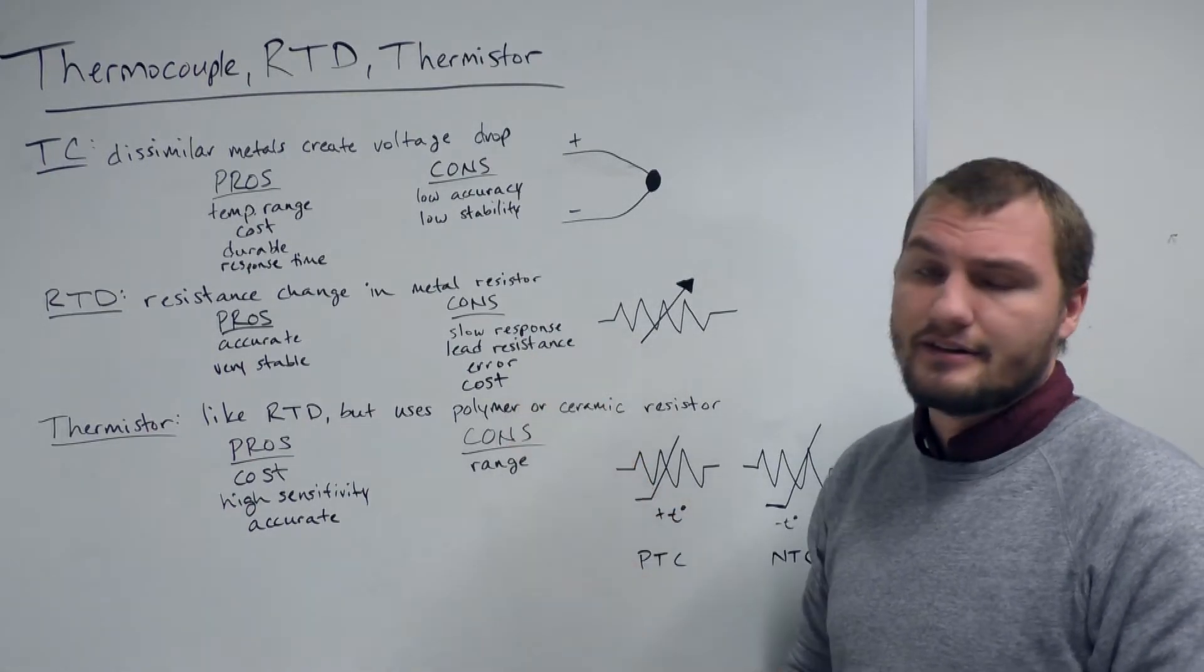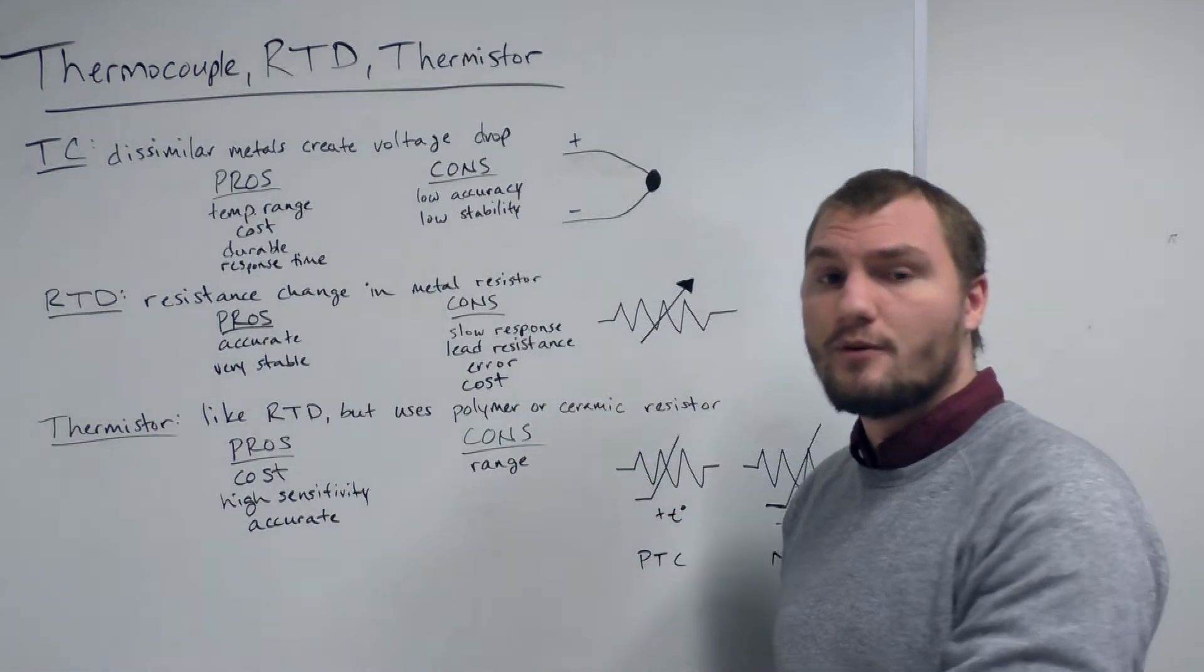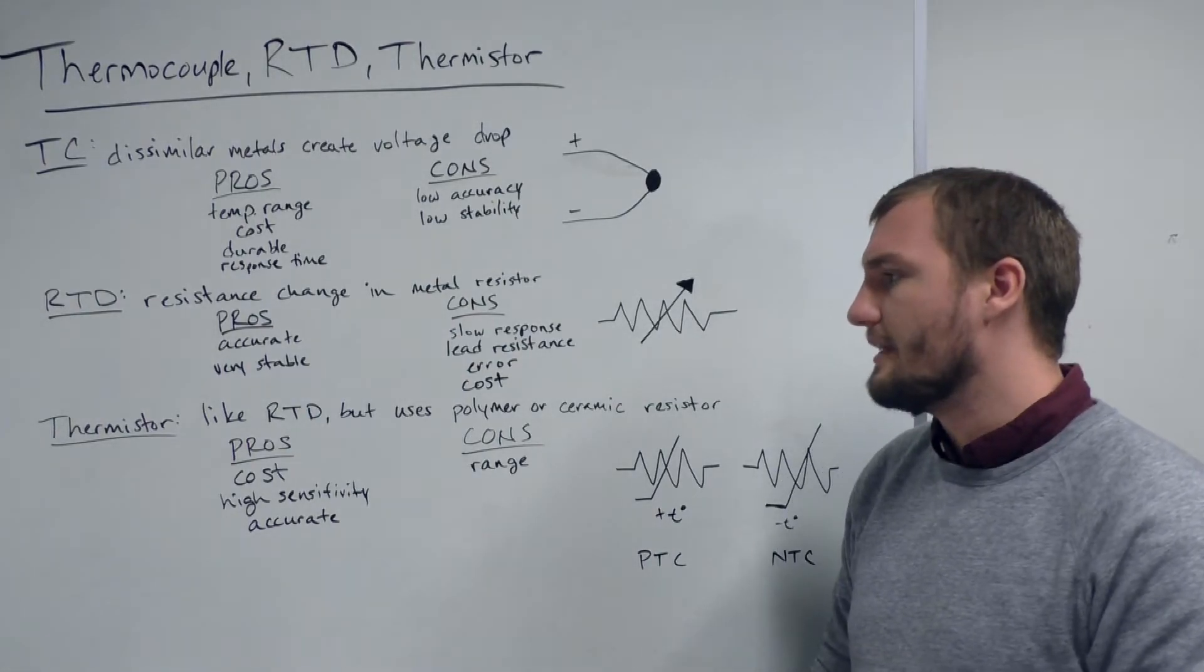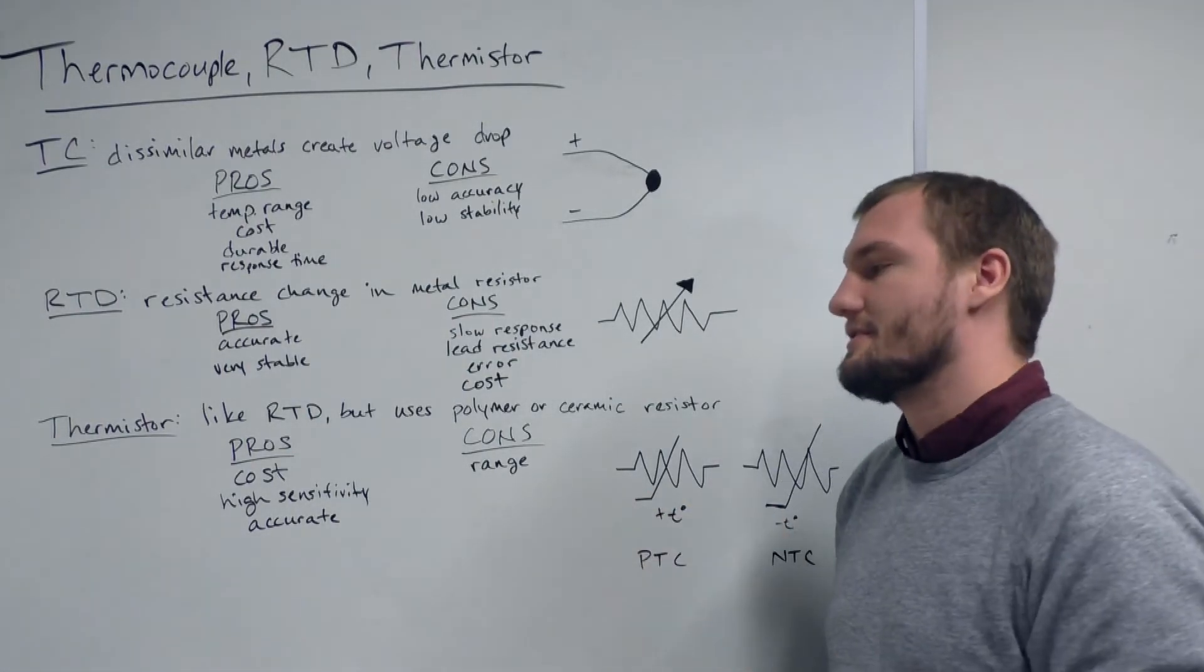Particularly because of this lead resistance error, the two-wire, three-wire, and four-wire RTDs are available to deal with that, and as the wires go up, the price tends to go up as well.